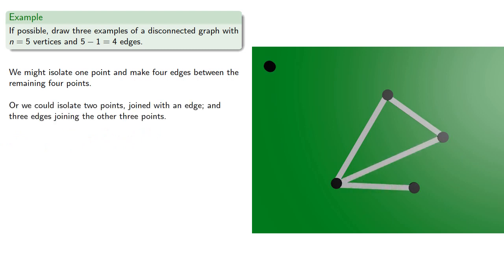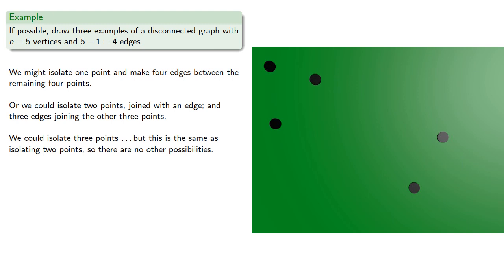Or we could isolate two points, joined with an edge, and three edges joining the other three points. We could isolate three points, but this is the same as isolating two points, so there are no other possibilities.